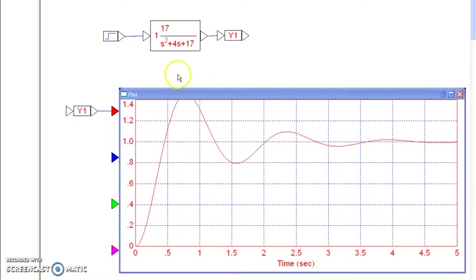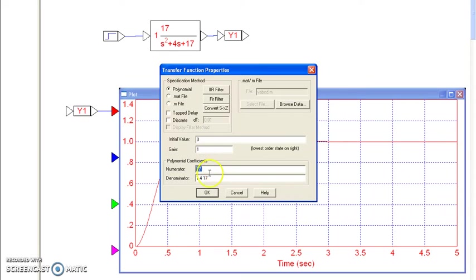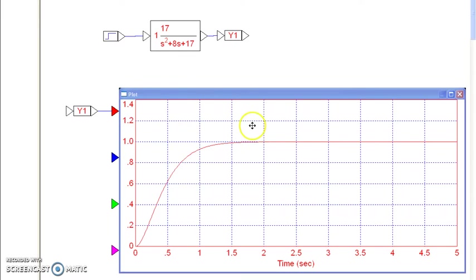To make the real part of the pole minus 2, it now settles out in about 2 seconds. Make the real part of the pole minus 4, it now settles out in about 1 second. That's the real part of the pole. Turns out the real part is half of this term.